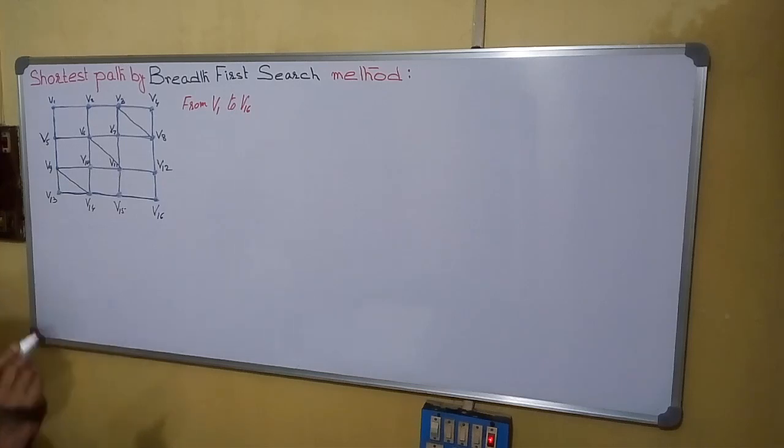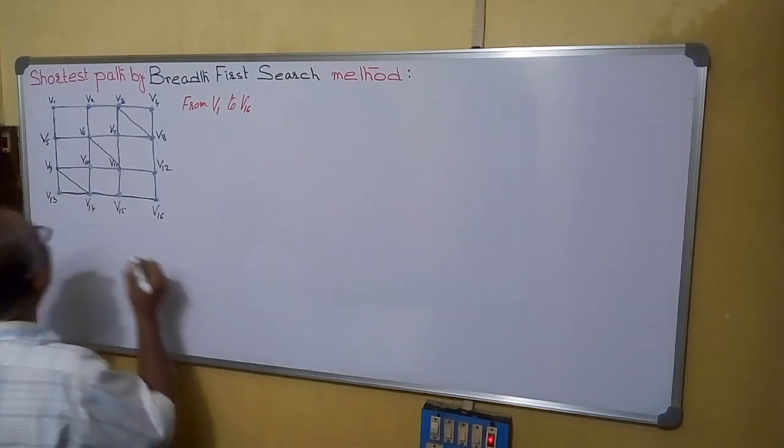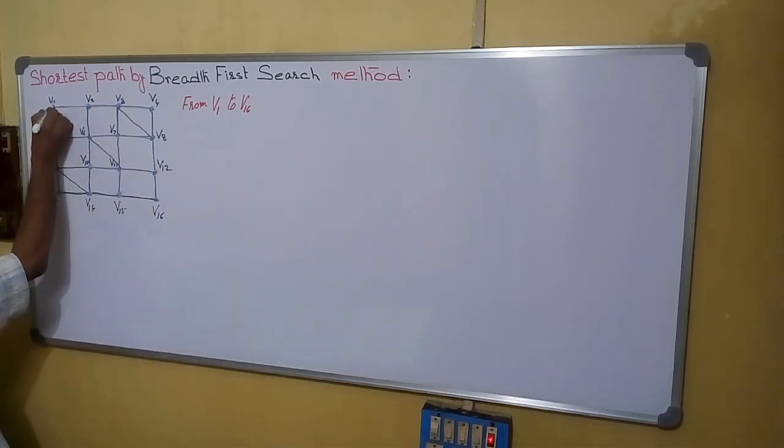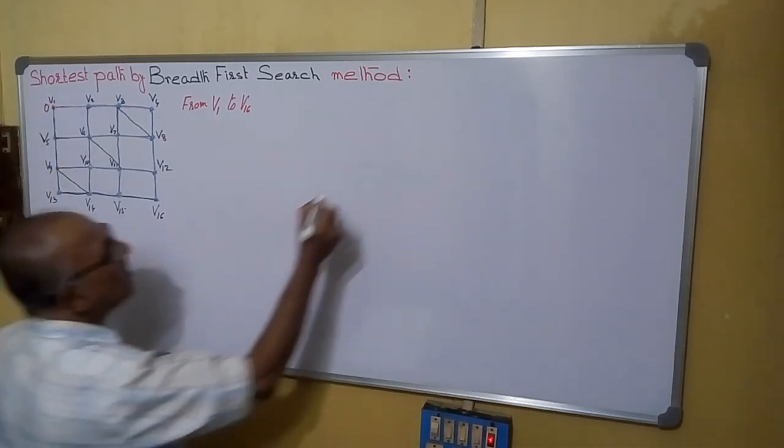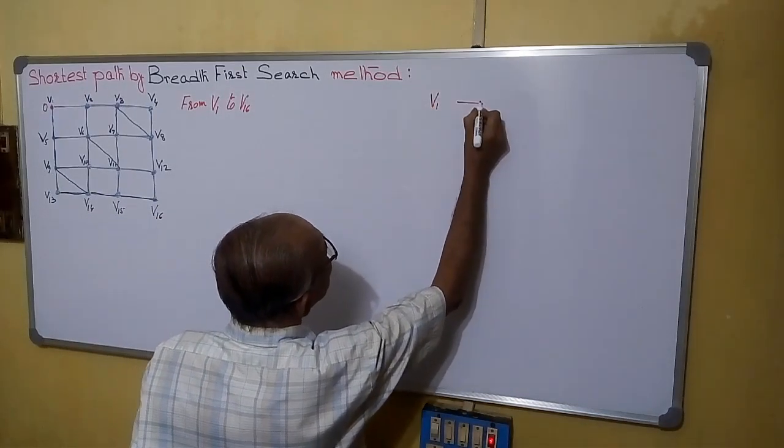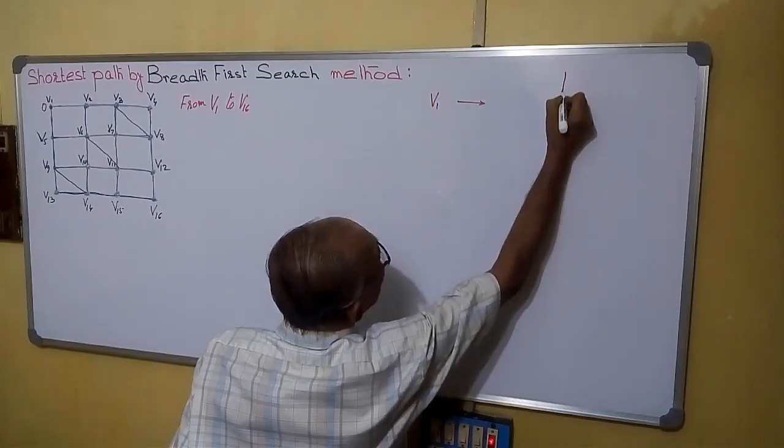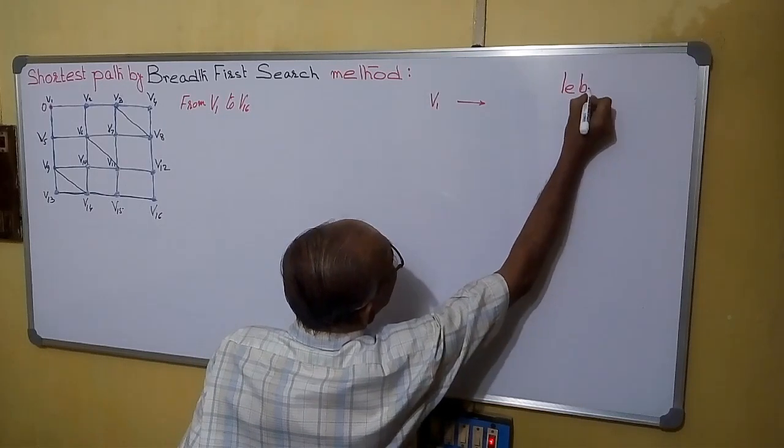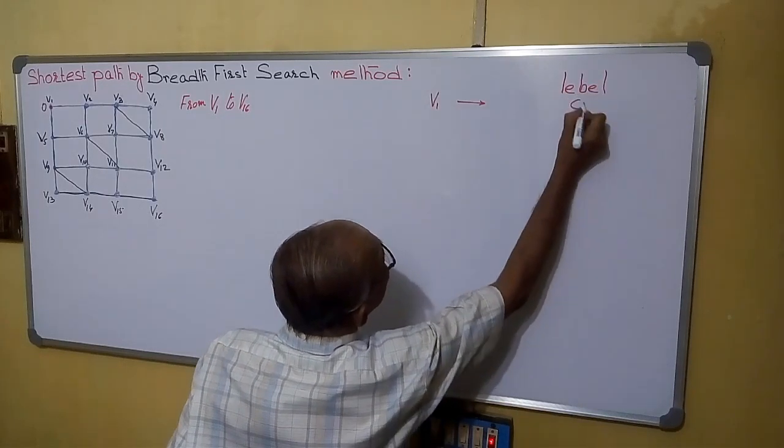So first we have to do step by step. First we will mark this V1 as 0. See here you can do it as rough work. V1 is marked as level. We are doing level. Level is 0.